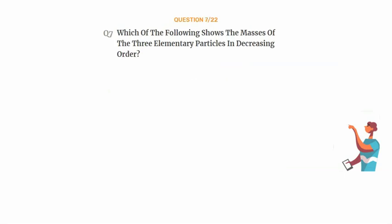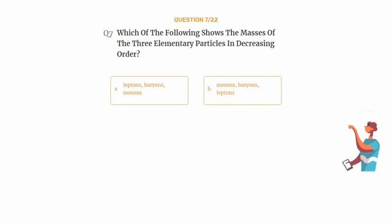Question number 7. Which of the following shows the masses of the three elementary particles in decreasing order? Option A: Leptons, baryons, mesons. Option B: Mesons, baryons, leptons. Option C: Baryons, mesons, leptons. Option D: Leptons, mesons, baryons.